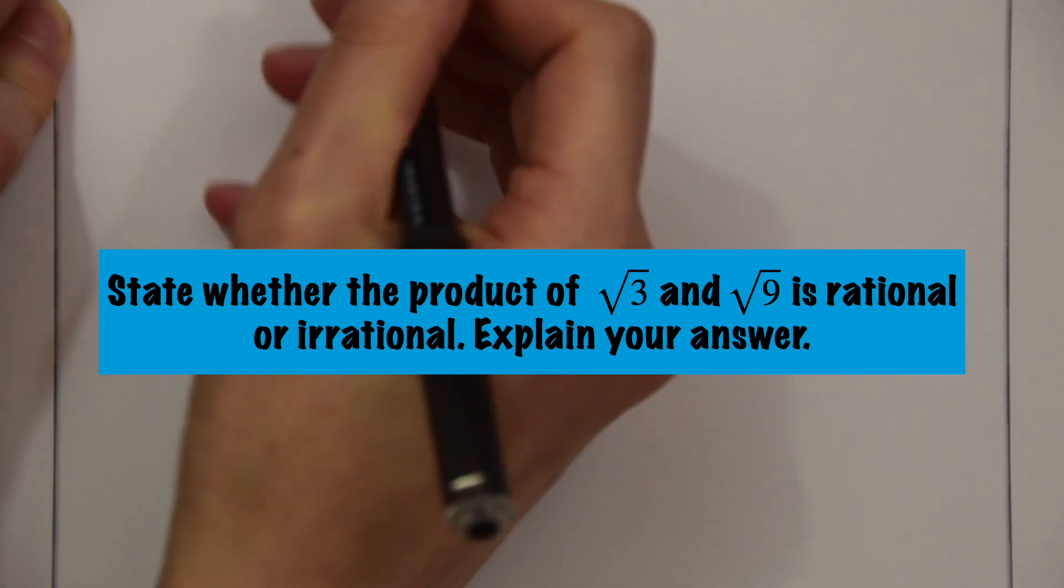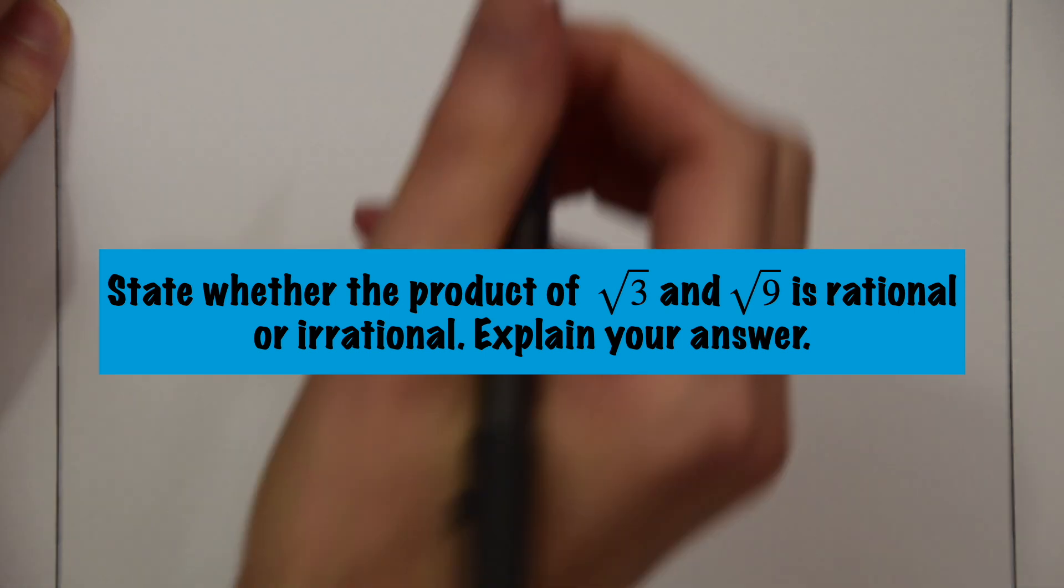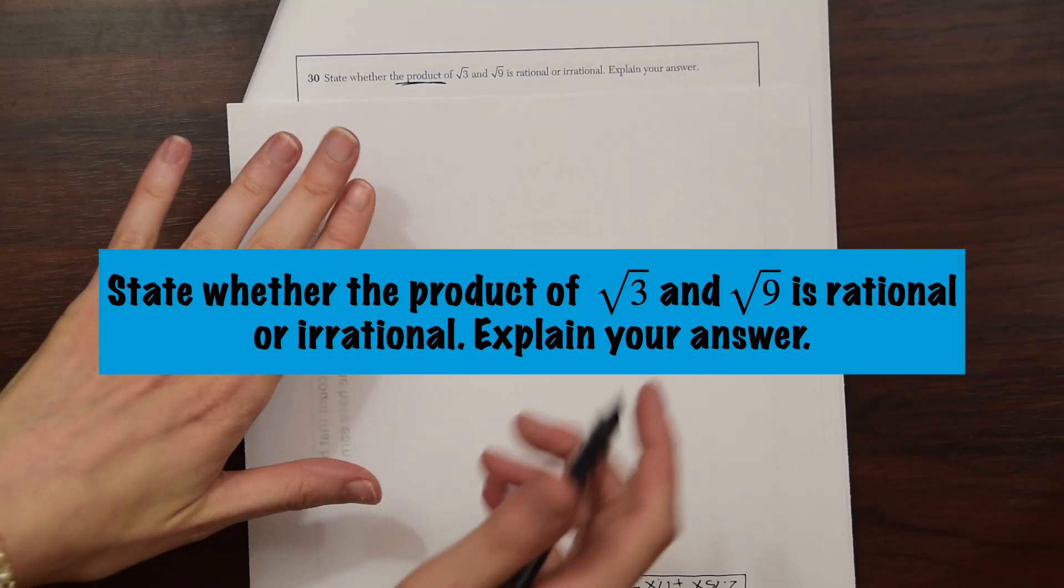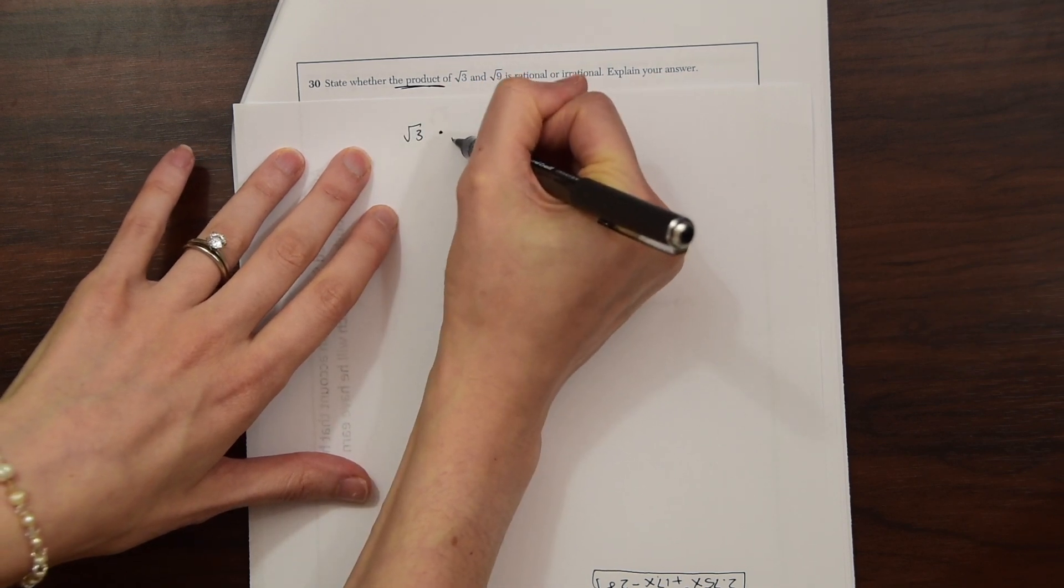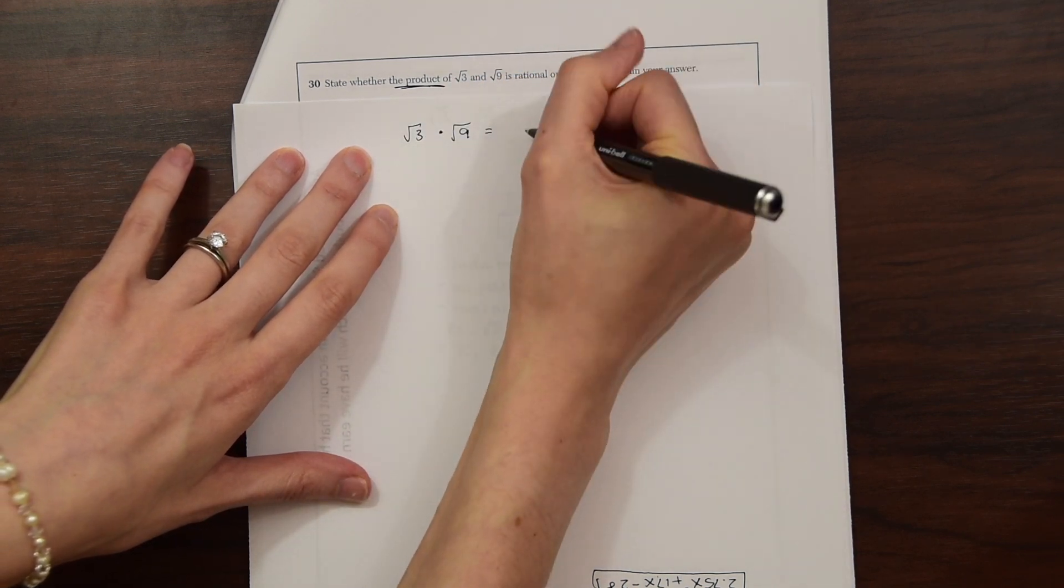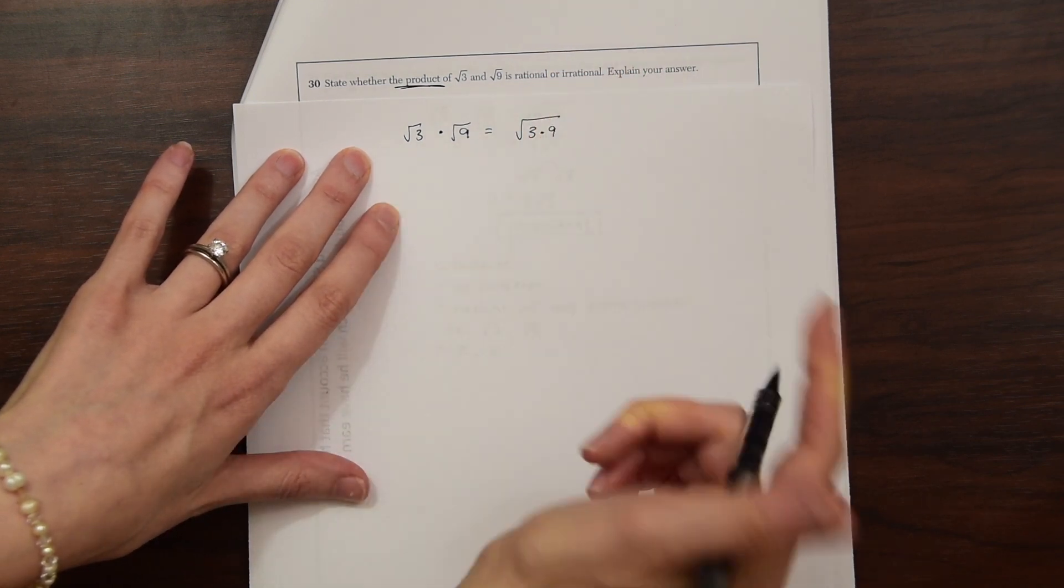So the product, we know we're going to be multiplying them. So there are some rules to know about rational or irrational numbers, but I'm just itching to multiply these. So let's just do that first. So to multiply these together, we're really going to be doing radical 3 times radical 9, which is really like radical 3 times 9, just all under that radical.